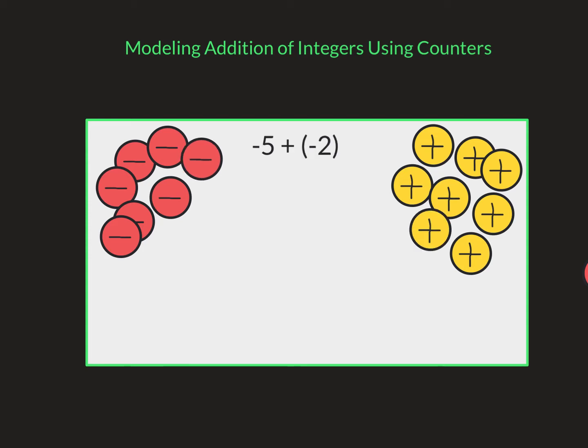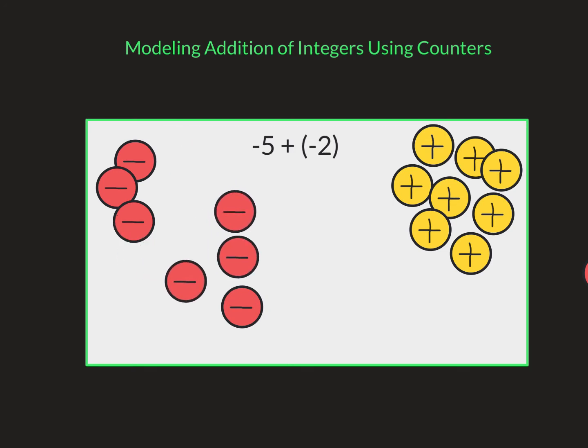So let's talk about it. In this number sentence, we have negative five plus negative two. The way I start is I start with whatever my starting value is on the left. So I have negative five and I'm adding two negative twos. And then I just count what I have.